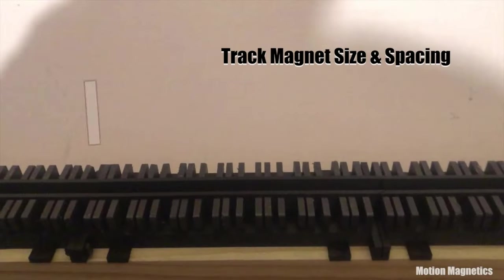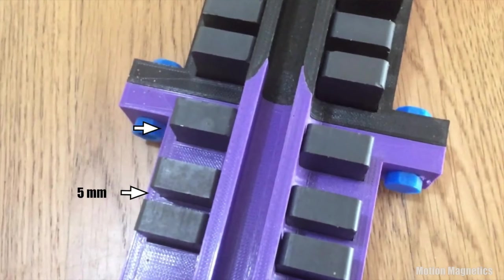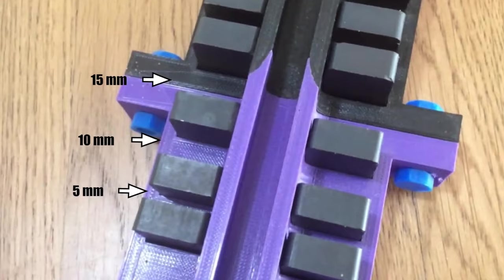The spacing he used was basically one half the width of the magnets he used in his track, followed by the width of the magnets, and then one and a half the width. This is cycled along the length of the track. In his track, that would be 5 millimeter to 10 and then 15 millimeters.